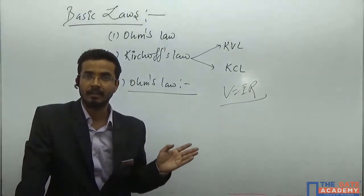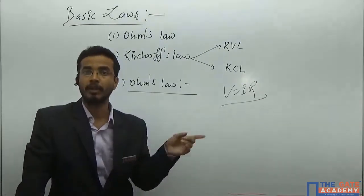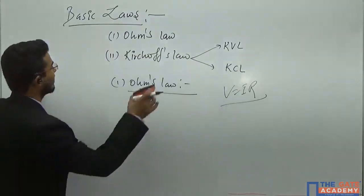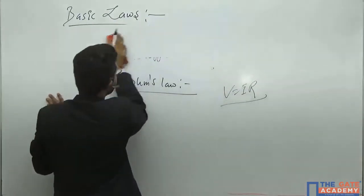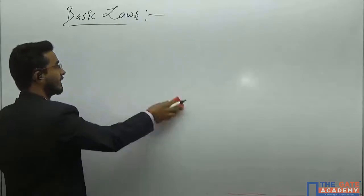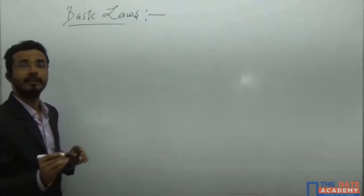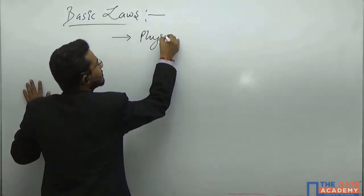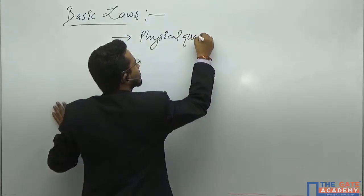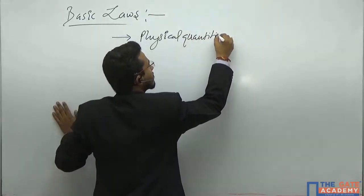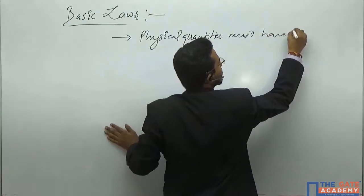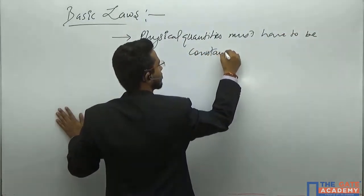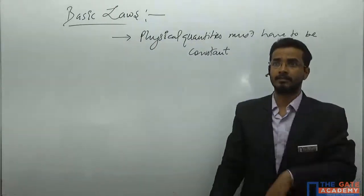If the triangle is not a right angle, you cannot apply Pythagoras. That is why conditions are very important. So firstly you have to mention the condition over which that law is valid. So what is the condition here? All the physical quantities must have to be constant.